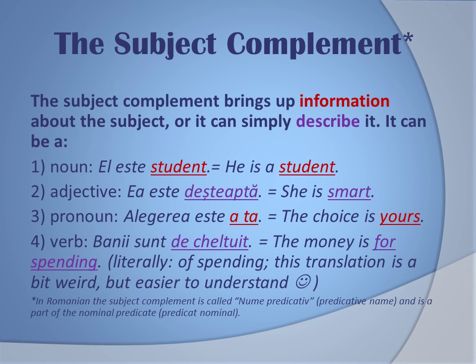Third example with a pronoun: 'alegerea este a ta' — the choice is yours. It gives the subject 'alegerea' a sort of identity — we know whose choice it is. Fourth example with a verb: 'banii sunt de cheltuit' — the money is for spending. What kind of money? For spending.